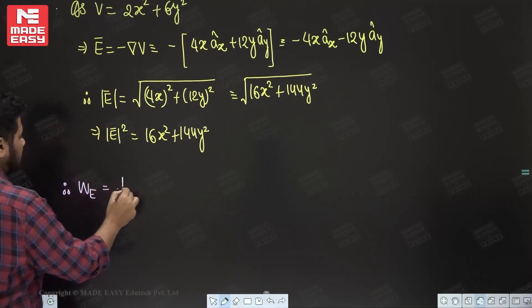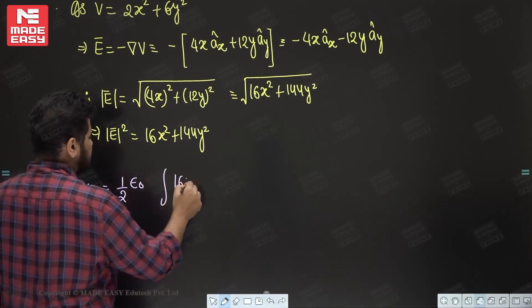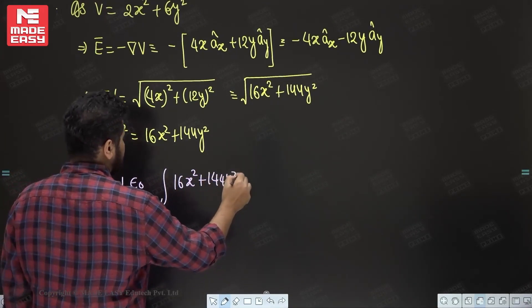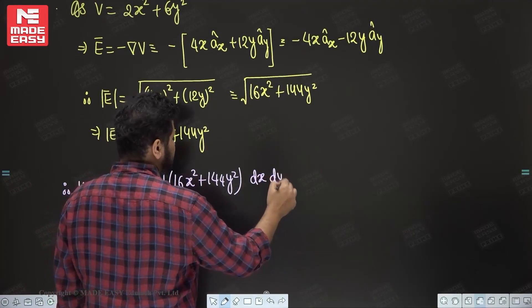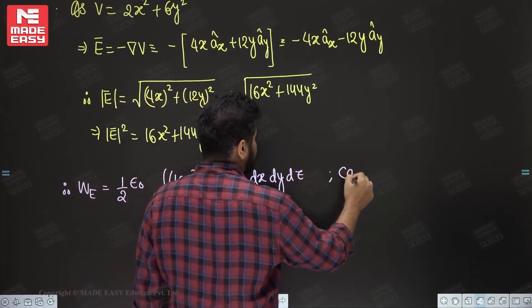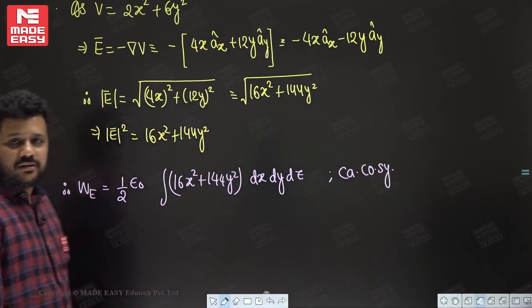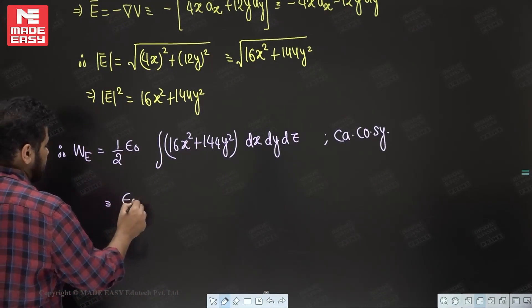It is equal to half epsilon naught, you can take outside, mod of E square is 16x² + 144y². And dV, since it is Cartesian coordinate system, it will be dx dy dz. We have selected Cartesian coordinate system. Now we can easily integrate it. This is epsilon naught upon 2.